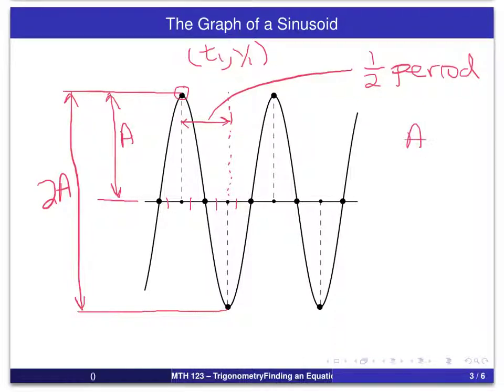So remember, what we're actually after are a, b, c, and d. a will be the amplitude and b will be determined by the period. d we will get as the vertical shift and c will be the phase shift, depending on whether we use a sine or a cosine.